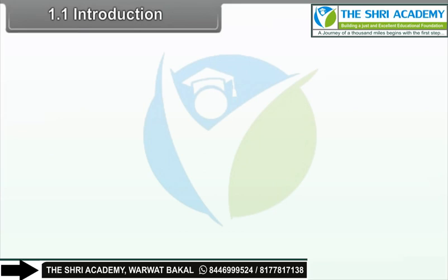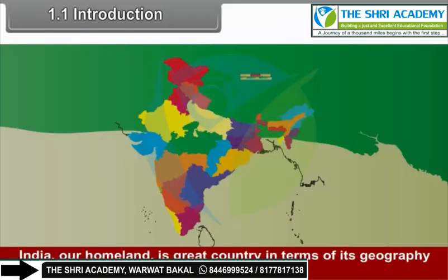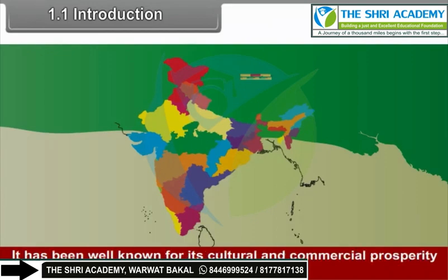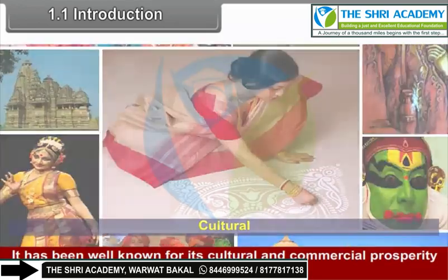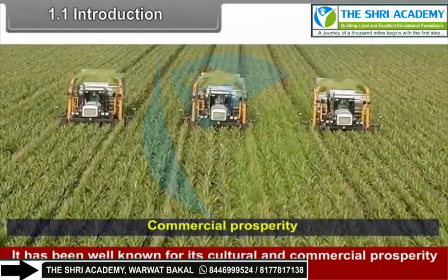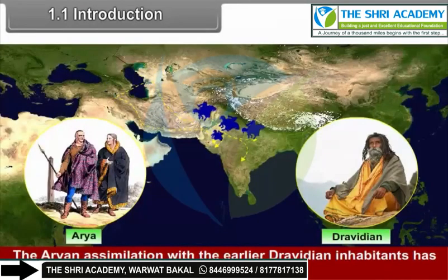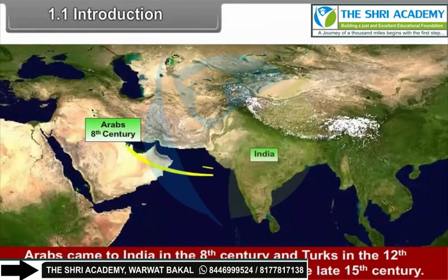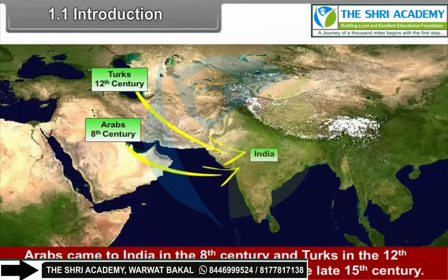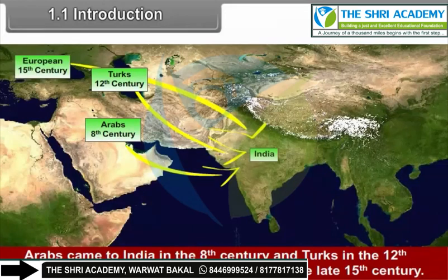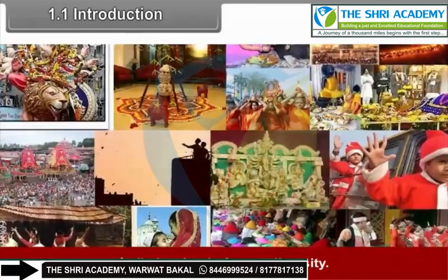India, our homeland, is a great country in terms of its geography and history. It has been well known for its cultural and commercial prosperity for a long time. The Aryan assimilation with the earlier Dravidian inhabitants formed the classical Indian culture. Arabs came to India in the 8th century and Turks in the 12th century, followed by European traders in the late 15th century. India is a land of great diversity.